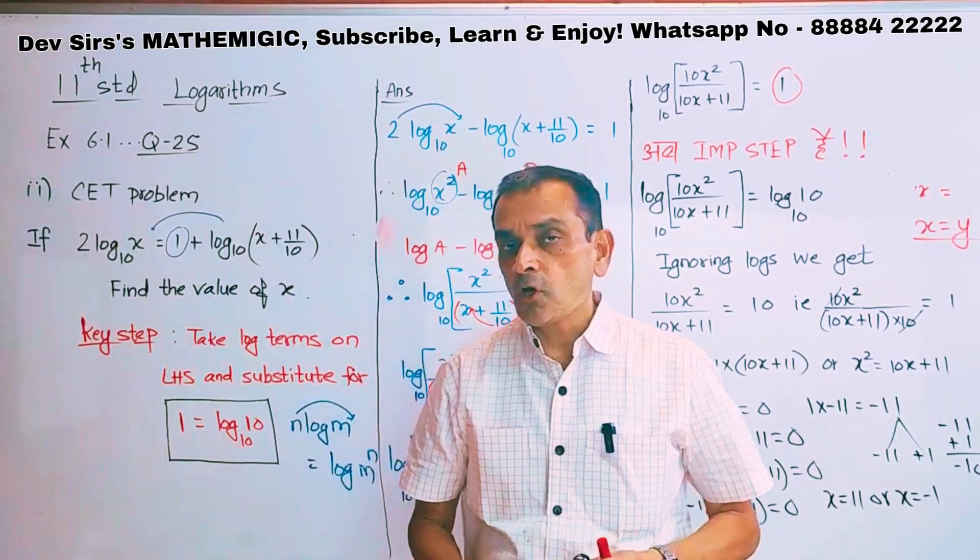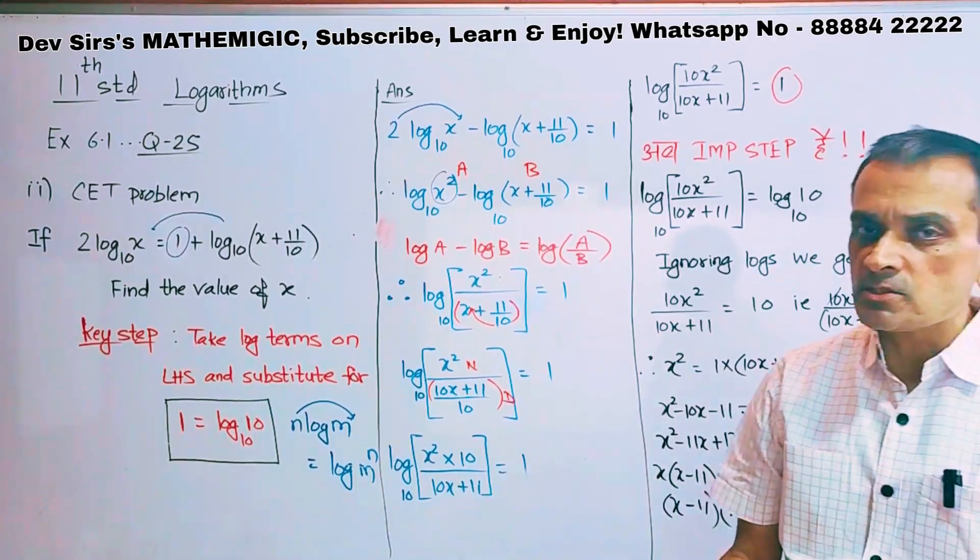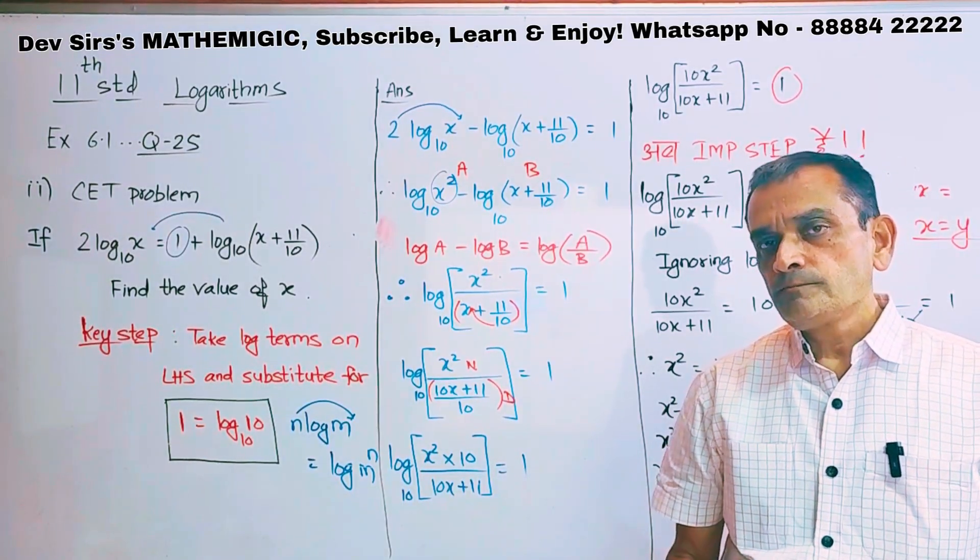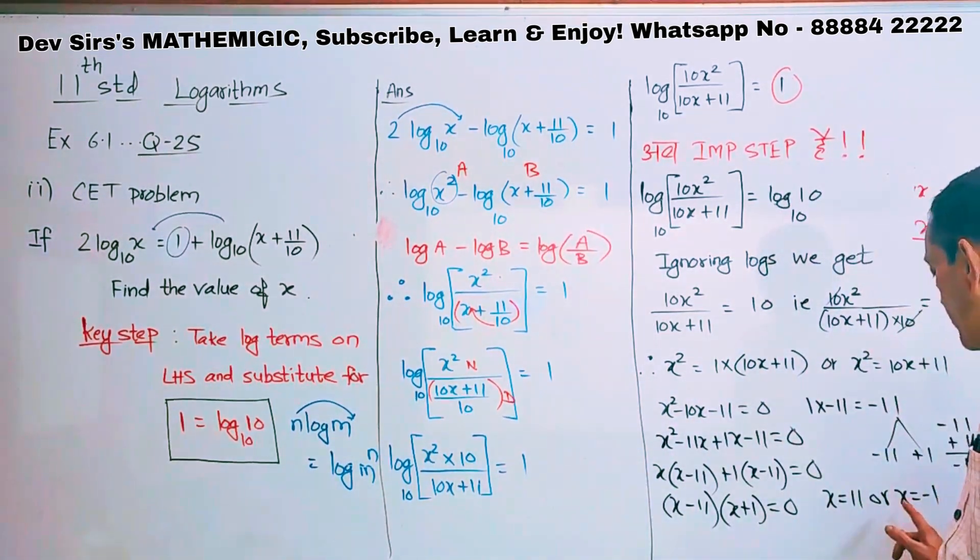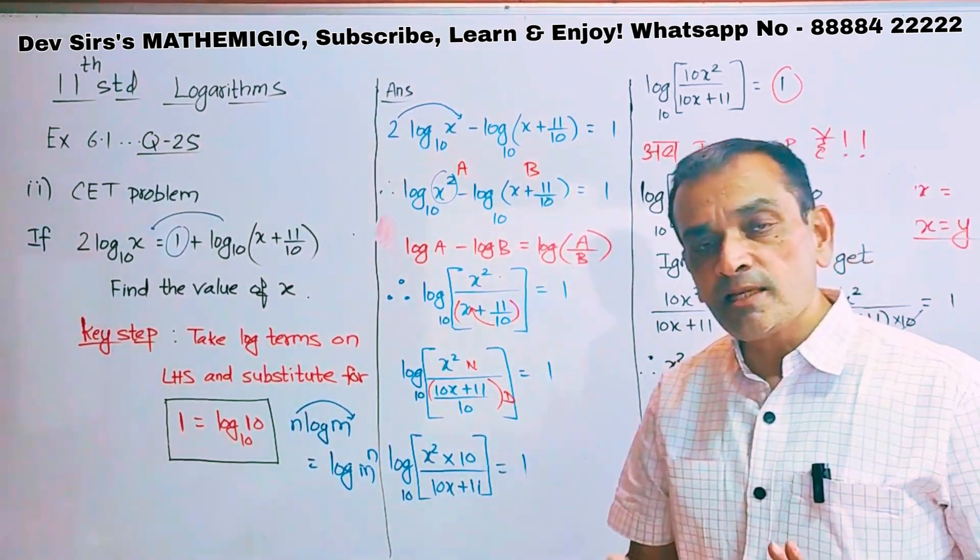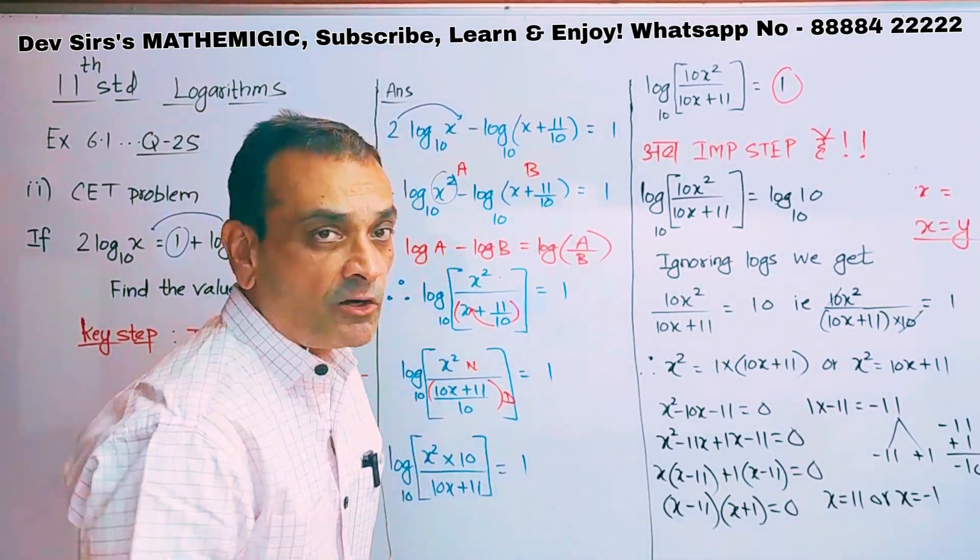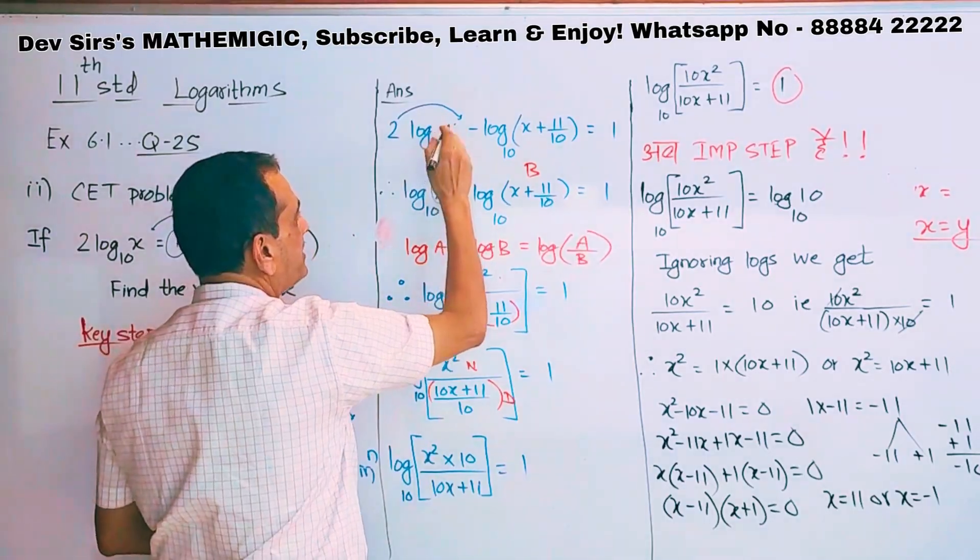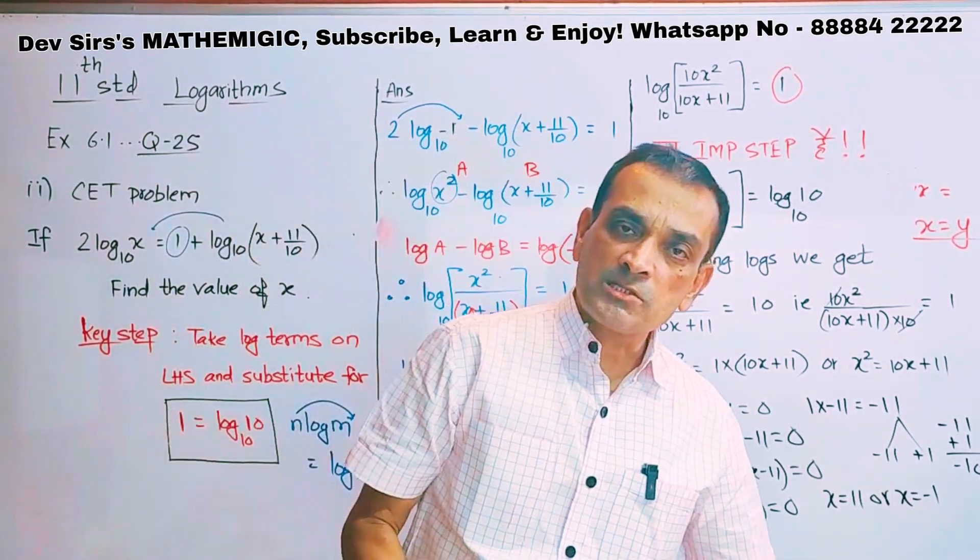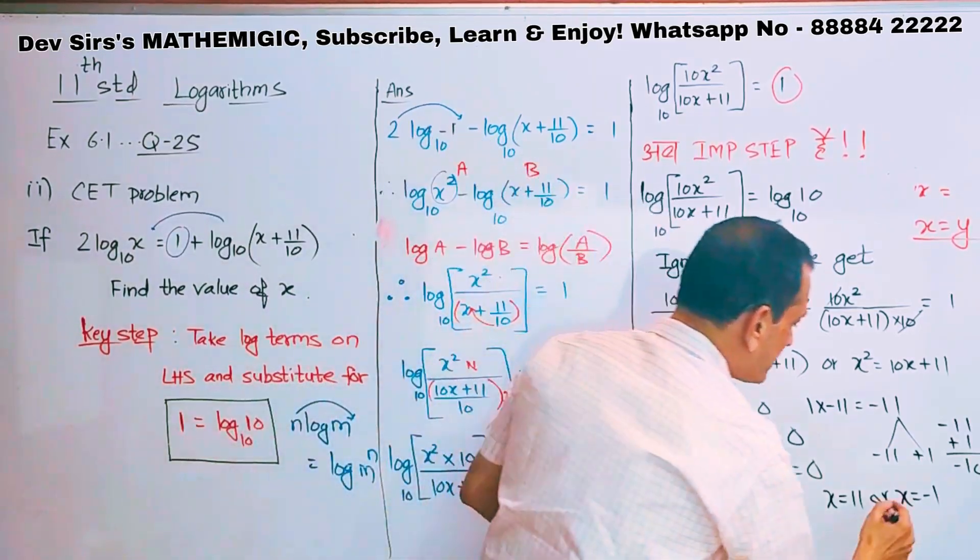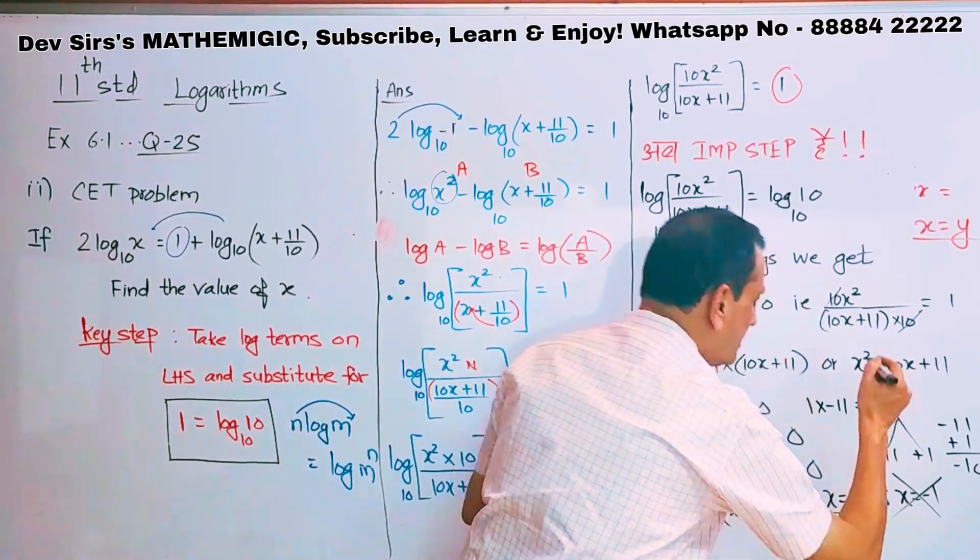Now in all problems of logs, in most cases if you are getting log of a negative number, it is not allowed. So in most cases we have to neglect the negative sign. So x equal to minus 1 we can't select, because if you select x equal to minus 1 and put over here, log of minus 1, log of a negative number does not exist. So x equal to minus 1 is rejected. Final answer is x equal to 11.